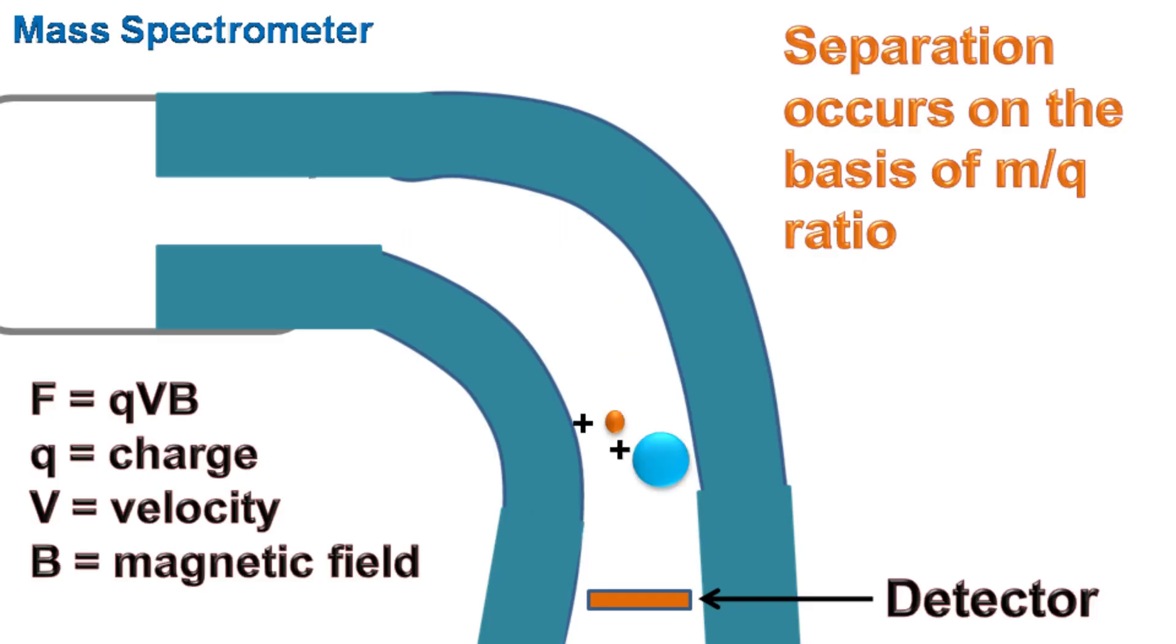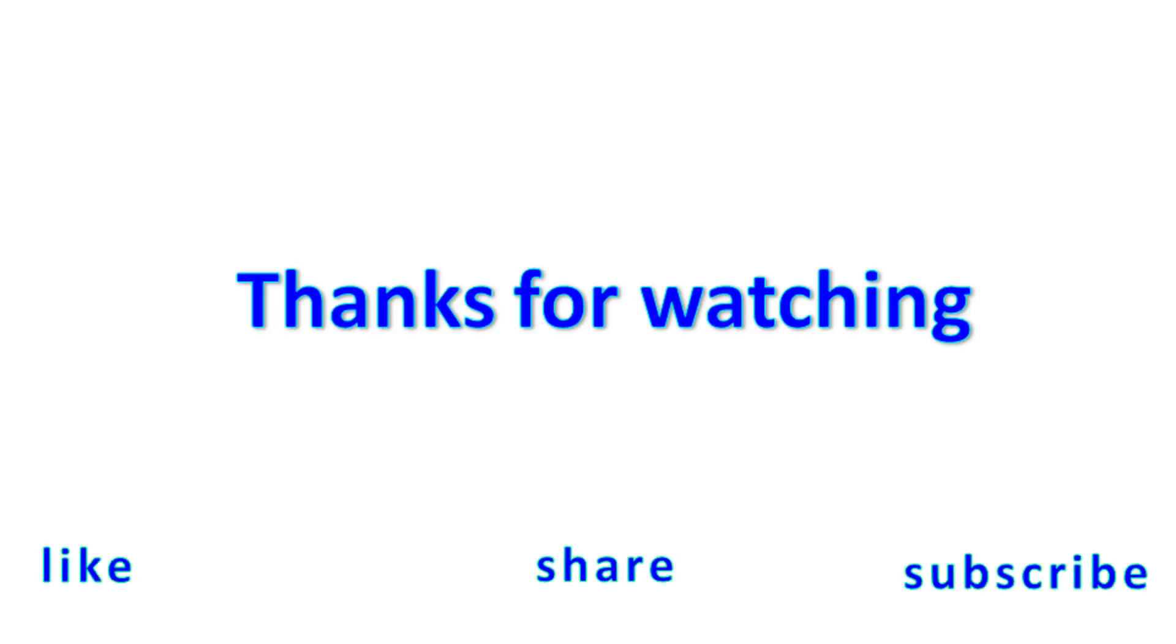Once the ions are separated, they are detected by the detector and the information is obtained on the computer.